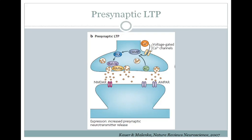LTP can also be caused by presynaptic mechanisms. For instance, calcium entry into the presynaptic cell can work through another signaling cascade to increase the amount of neurotransmitter released following every depolarization of the presynaptic cell. This will increase the amount of neurotransmitter in the cleft, which can then cause an increased postsynaptic EPSP.